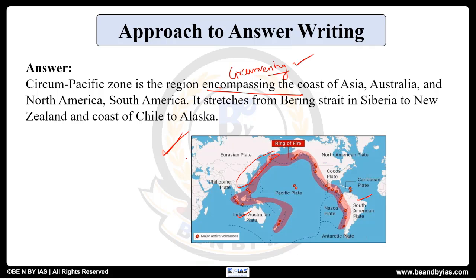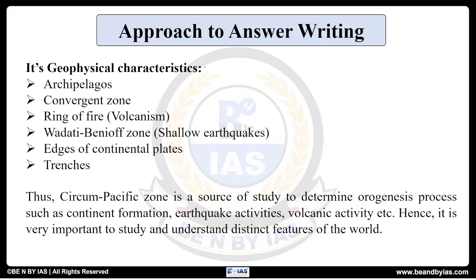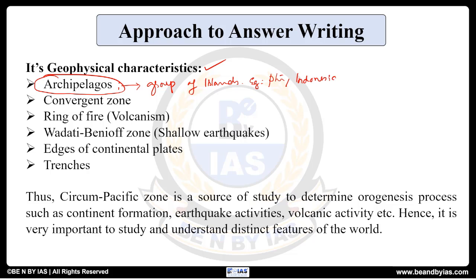After defining it and drawing the diagram, directly go to the body where our target is geophysical characteristics. The first characteristic is that it consists of a lot of archipelagos — groups of islands. You have to mention and briefly write about each characteristic. For example, for archipelago you can give examples: Philippines, Indonesia, entire Polynesia — these are examples indicating groups of islands. So this entire Circum-Pacific Zone has a lot of archipelagos.